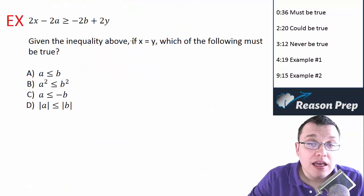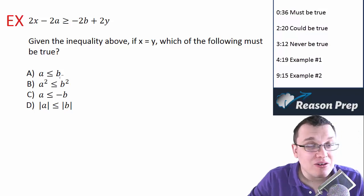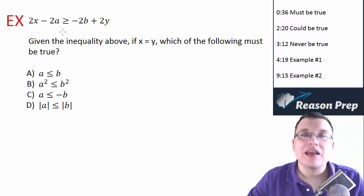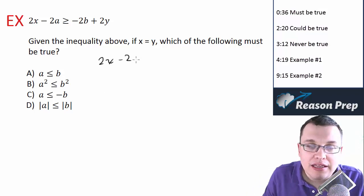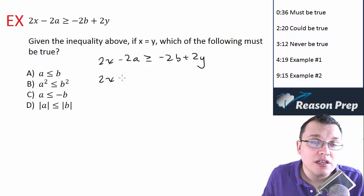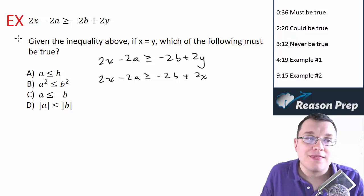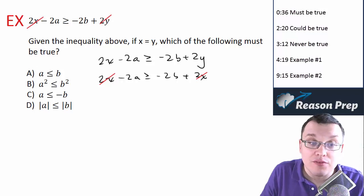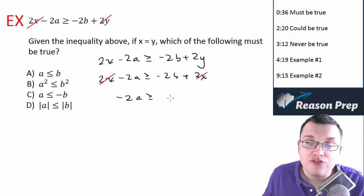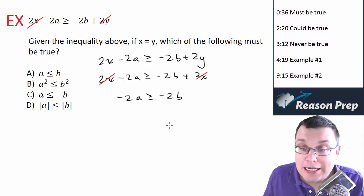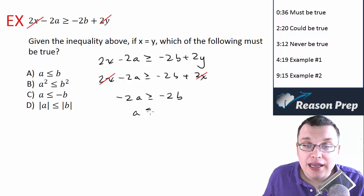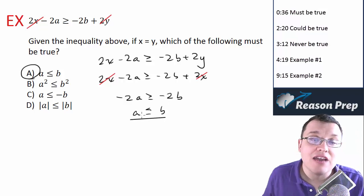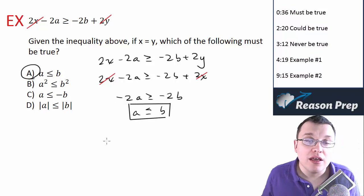Here's another example. We're given an inequality, and told x equals y — which of the following must be true? Let's start with the inequality and substitute x in for y. When we do that and subtract 2x from both sides, the 2x and 2y terms cancel, so they're irrelevant given x equals y. We're left with negative 2a is greater than or equal to negative 2b. Dividing both sides by negative 2 gives a is less than or equal to b — and that's choice a.